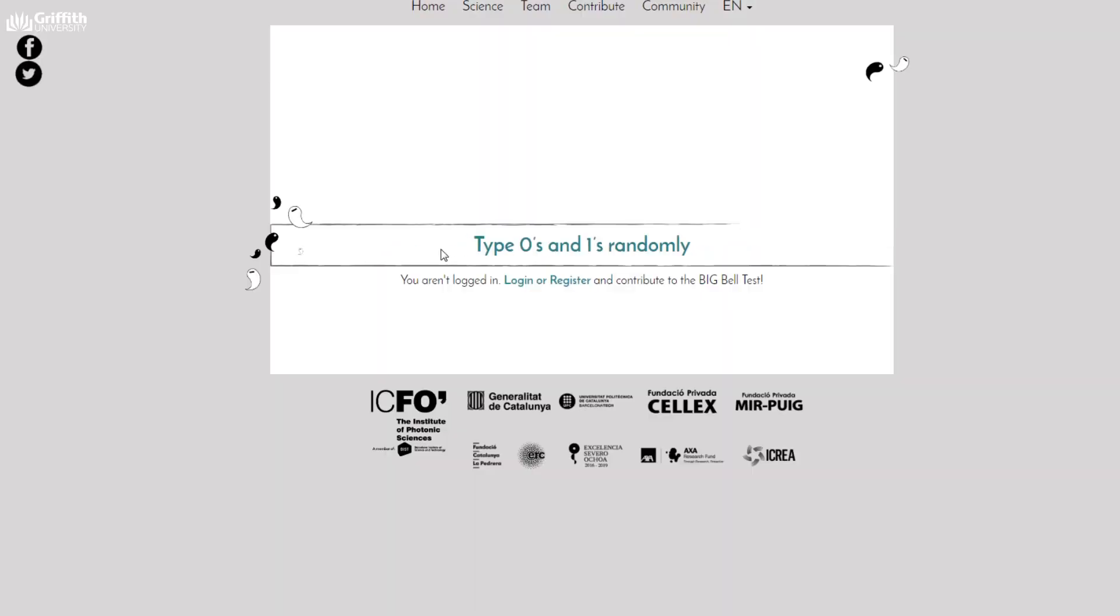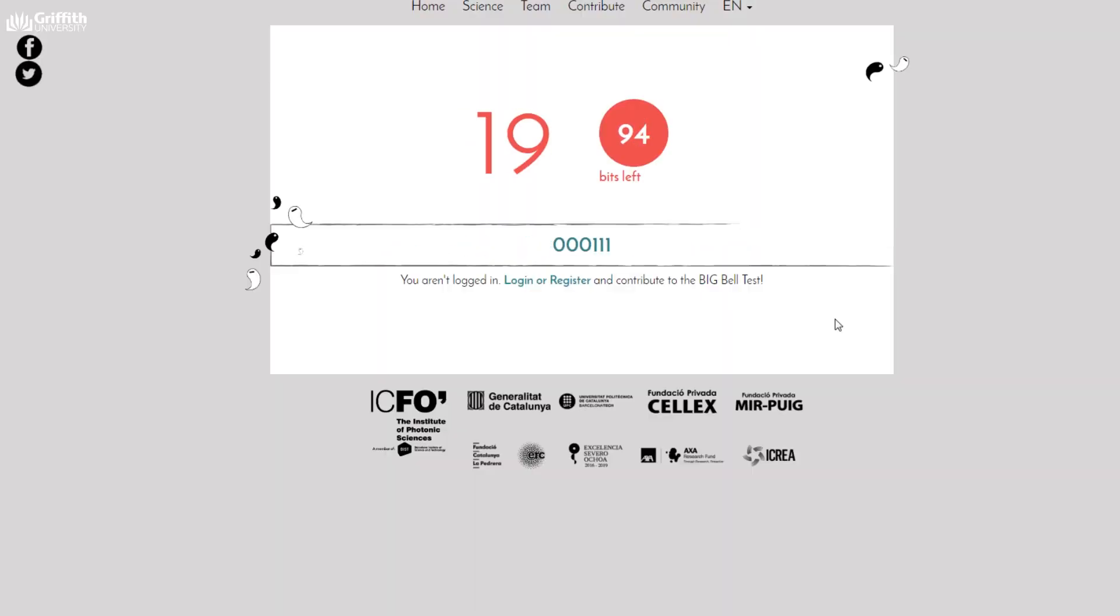One of the features of the Big Bell Test is that we're going to use people's free will to generate random numbers which can be input to the measurement settings of the experiment. Now what's really cool about that is not only are we considering people's participation in an experiment through their free will, but also people are getting a chance to participate real time in real scientific experiments happening here at Griffith University and in a number of other places all around the world.